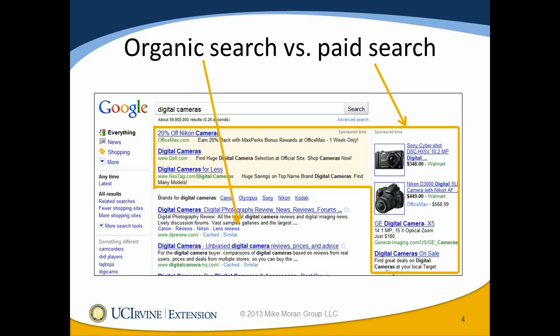Let's start with understanding how organic search works versus paid search. When you type in a keyword such as digital cameras, you see two different kinds of search results. You see the kind that's in the orange box, which are the paid search results. You also see the other results in that middle column in the lower part of the page, which are known as the organic search results. So the first thing I want to do is talk through some of the terminology. Keyword is what we call the words that are typed into the search box — in this case, digital cameras.